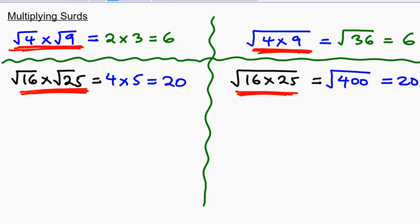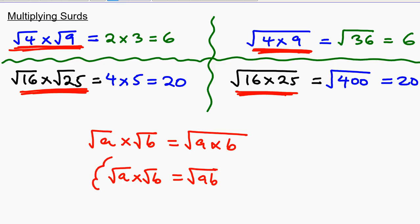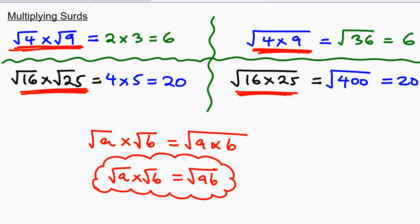Now there are two things we can notice — this part of the question is the same as that part of the question. So we can generalize and say that if you have the square root of a multiplied by the square root of b, that should be equal to the square root of a multiplied by b. Or, we can say that √a × √b = √(ab), where ab means a multiplied by b. This is a very important result that we'll be using when multiplying surds. Let's look at some examples.